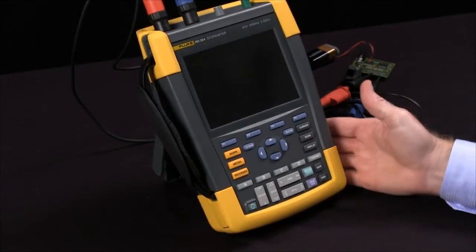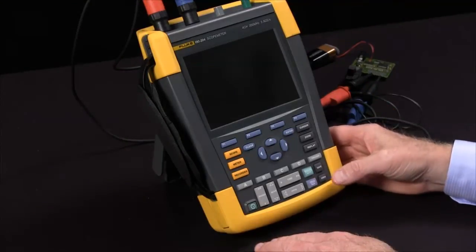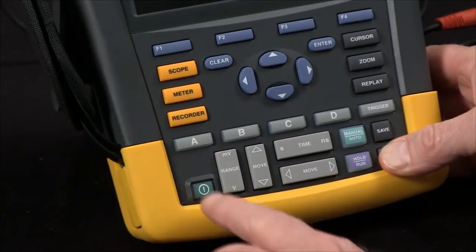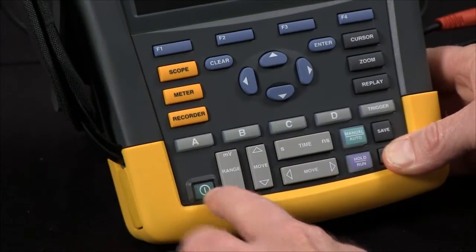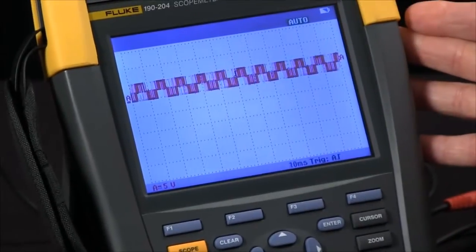In this video we're going to talk about how to reset the scope meter and just some basic setup. We'll start by holding down the user key as we press and release the power button. The unit will beep twice and come up with factory default settings.